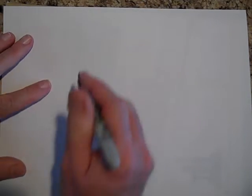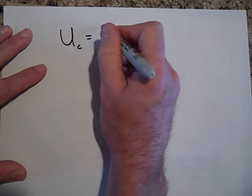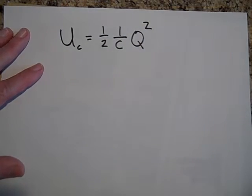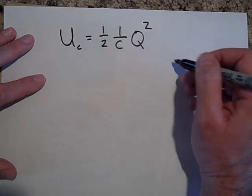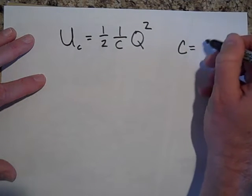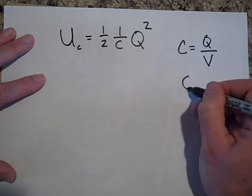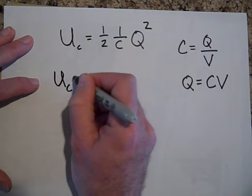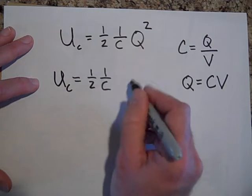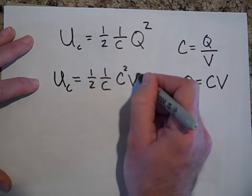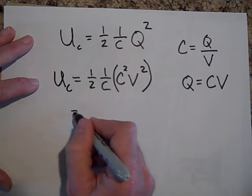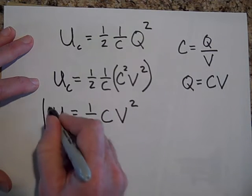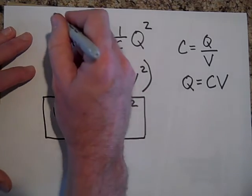Now here's the thing. If the energy stored in a capacitor, let's call that U sub c, is one half, one over c, Q squared, then we can get a few other forms of this because we know that Q is equal to CV. So if I put in for Q, I put in CV, we can get a couple more equations out of this. That would be c squared v squared. So that can simplify to one half c v squared. That's another form of the energy stored in a capacitor.